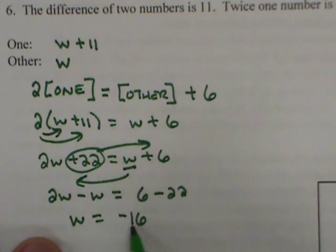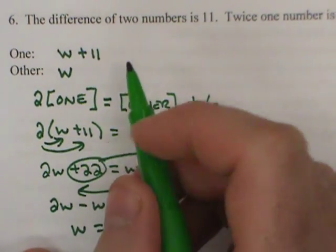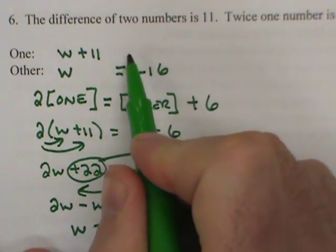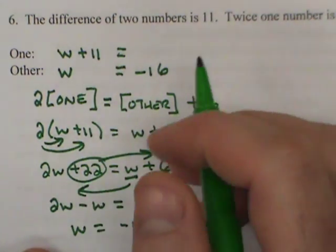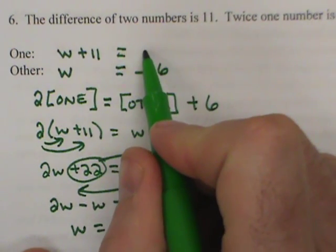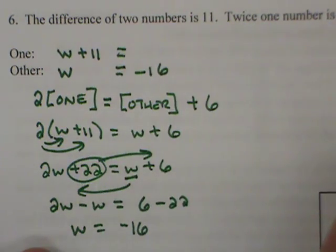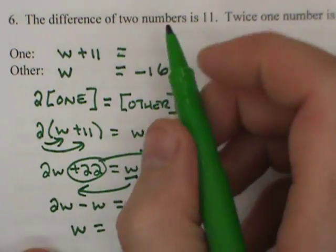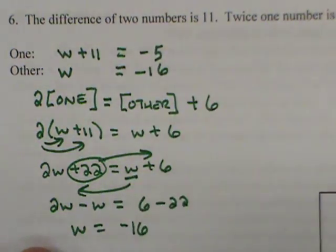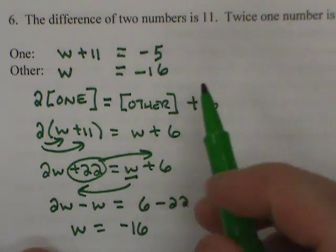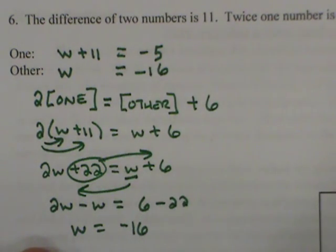Once I have established these answers, I can go back up to the top here. This is negative 16. If I add 11 to negative 16, I get, what is that, negative seven? No, not negative seven, five. Negative five. That's a little bit better. And so my answers would be one is negative five and other is negative 16.